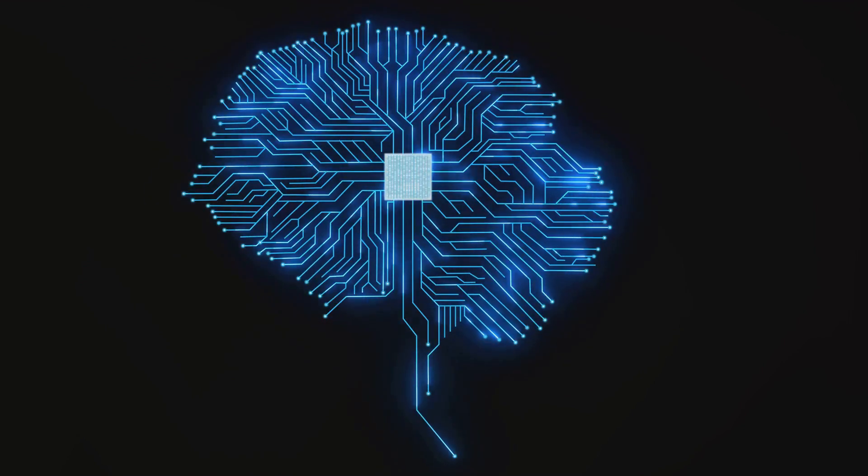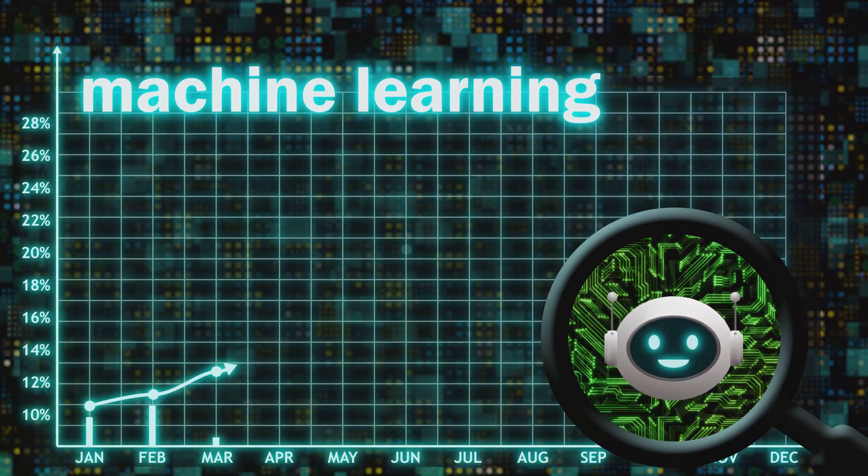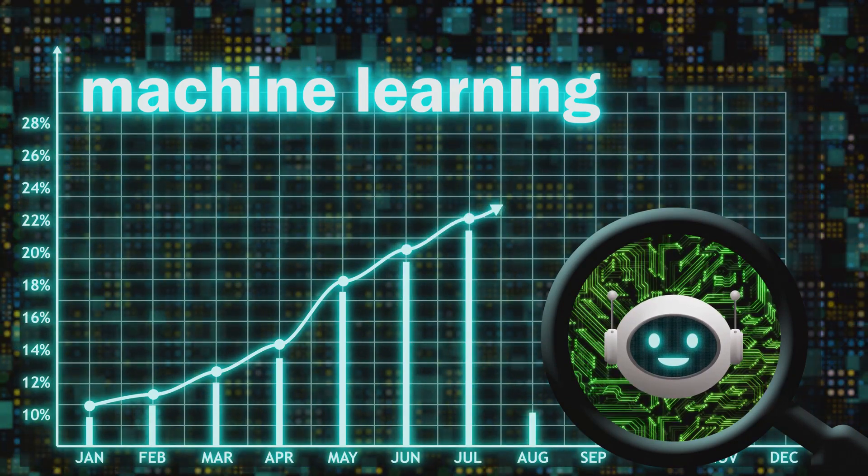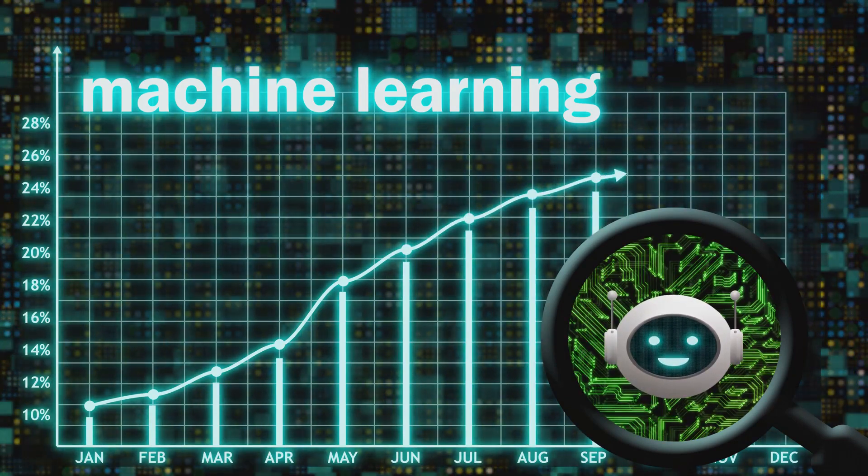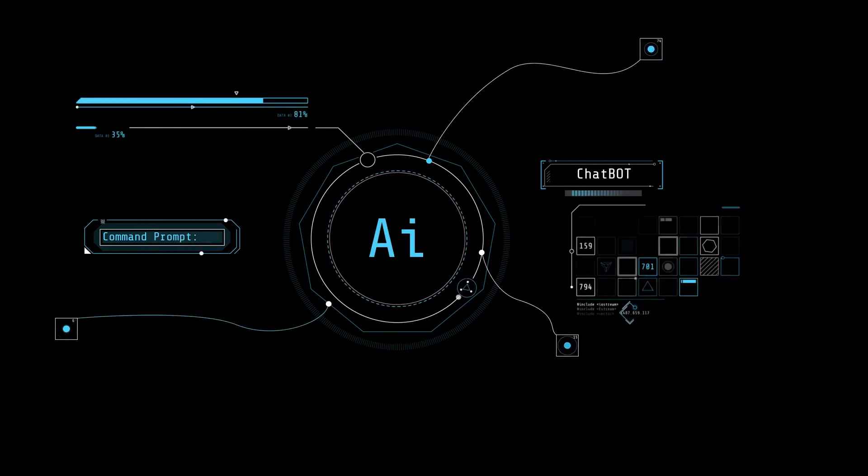At its core, artificial intelligence is the simulation of human intelligence in machines. It's like giving robots a brain, allowing them to learn, reason, and make decisions just like us. Now, this doesn't mean robots are sitting down with a cup of tea, pouring over textbooks. No, their learning is a bit different. It's through a process called machine learning where they're given a ton of data, and they learn to identify patterns and make predictions. Imagine a toddler learning to recognize shapes and colors, but on a colossal scale and at an unimaginable speed.